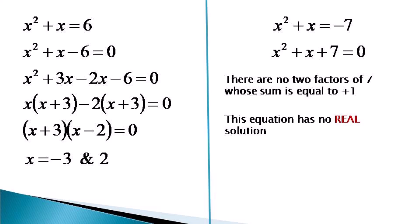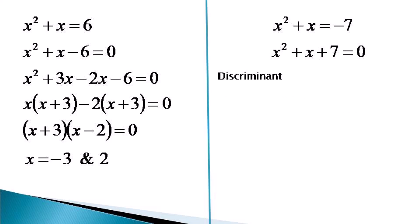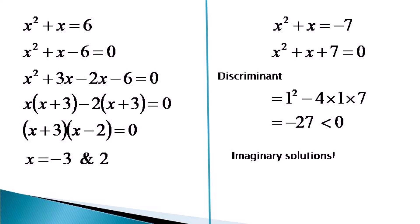We can also check through the discriminant of this equation. The discriminant is given as 1 squared minus 4 into 1 into 7, which equals minus 27, which is less than 0. So we will get imaginary solutions for this equation. Finally, we can tell that this equation has got only two real solutions: x equals minus 3 and x equals 2.